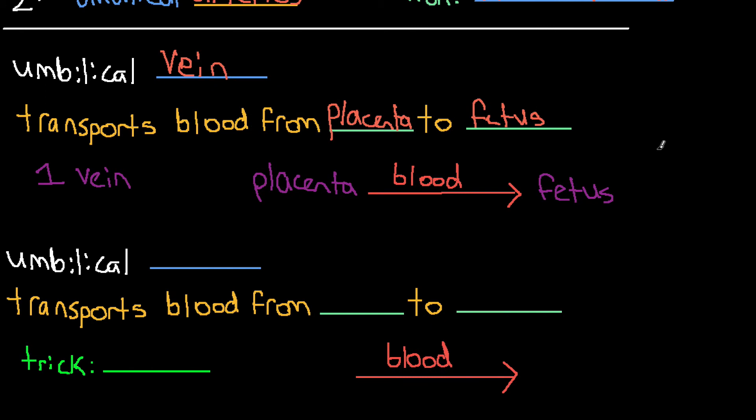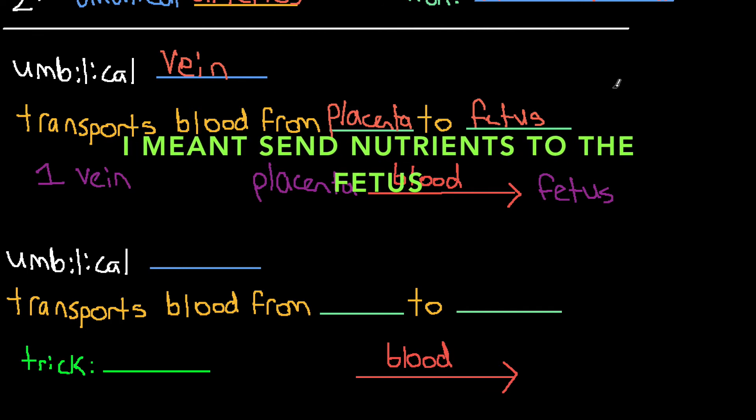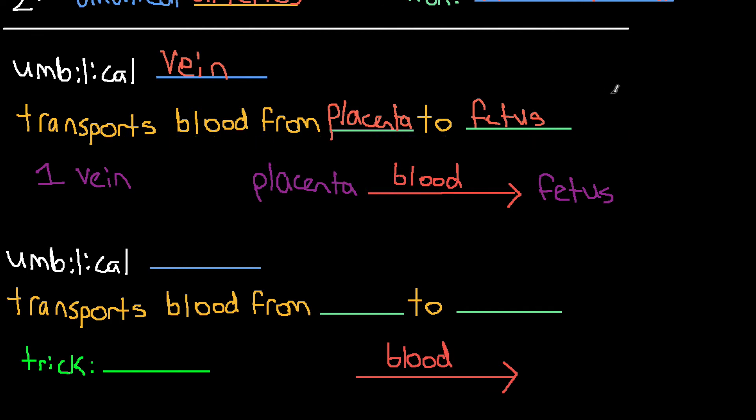It's sort of logical. Of course we want to send nutrients because we're sending these nutrients from the placenta to the fetus so that the fetus could continue to be healthy and grow normally and have normal development. So the vein will also transport nutrients.